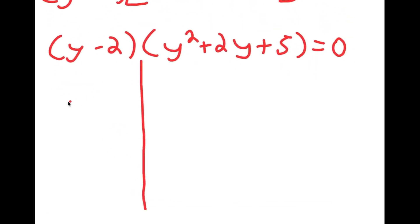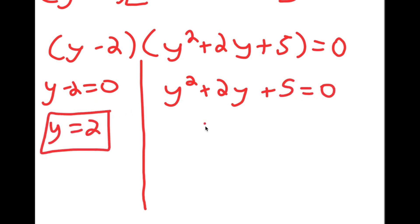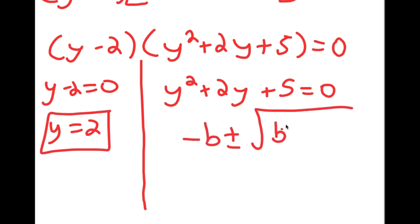Now I get two equations: y minus 2 is equal to 0, and y squared plus 2y plus 5 is equal to 0. For y minus 2 equals 0, y is obviously equal to 2. And for y squared plus 2y plus 5 equals 0, we're going to use the quadratic formula, which is negative b plus or minus the square root of b squared minus 4ac, all over 2a.